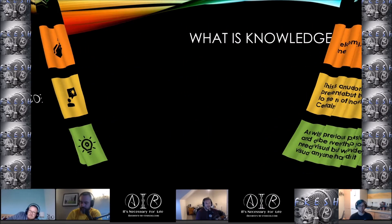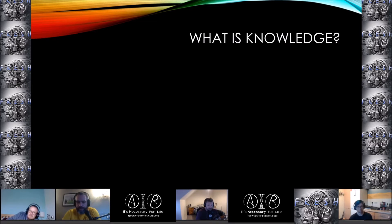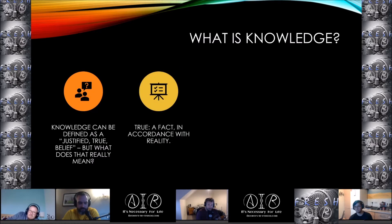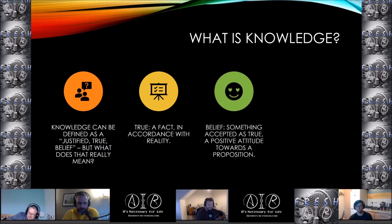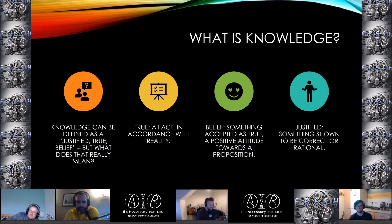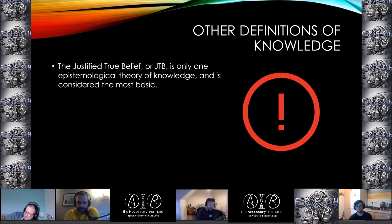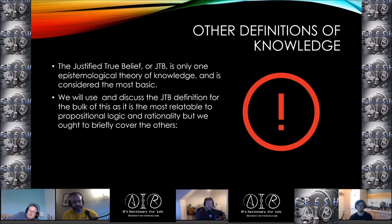The first question we have to ask ourselves is: what is knowledge? Knowledge can be defined as a justified true belief. True is a fact — it's in accordance with reality. A belief is something accepted as true or a positive attitude towards a proposition. Justified means something shown to be correct or rational. The justified true belief, or JTB, is only one epistemological theory of knowledge and is considered the most basic of all. We will use and discuss the JTB definition for the bulk of this, as it is the most relatable to propositional logic and rationality.